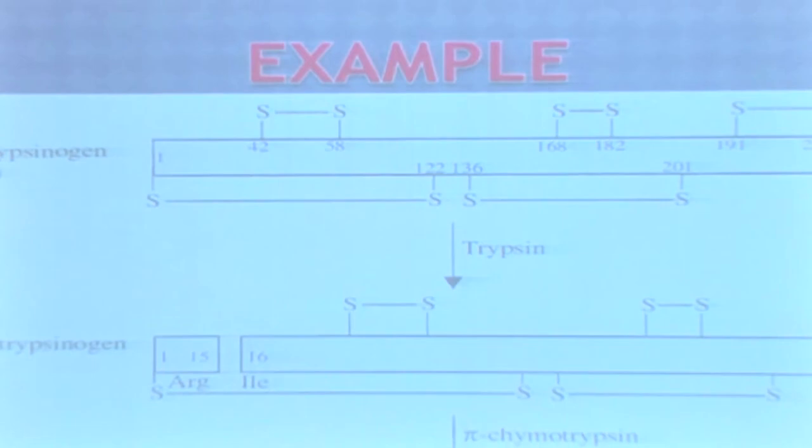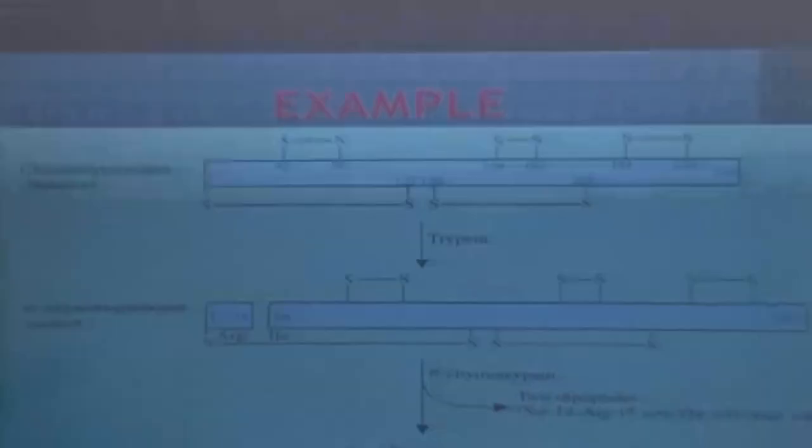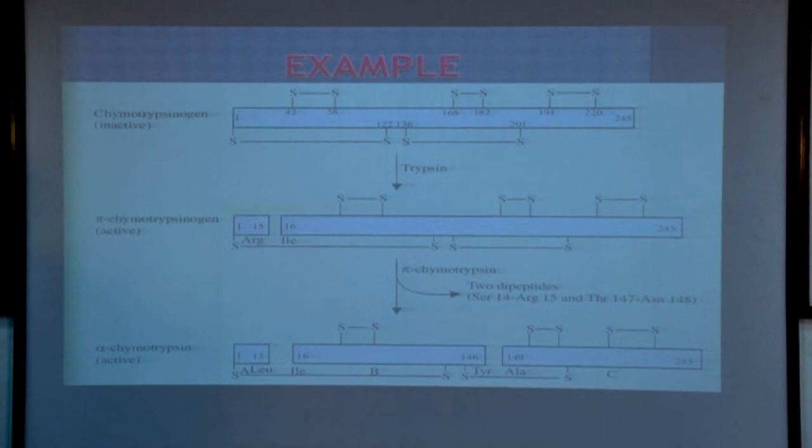As a result, the partially active form is converted to completely active alpha-chymotrypsin. This alpha-chymotrypsin consists of three fragments: A, B, and C. Two inter-disulfide bonds connect these three fragments, and two intra-disulfide bonds are present in fragments B and C. Through this proteolytic cleavage, chymotrypsinogen in inactive form is converted to the active form, chymotrypsin.